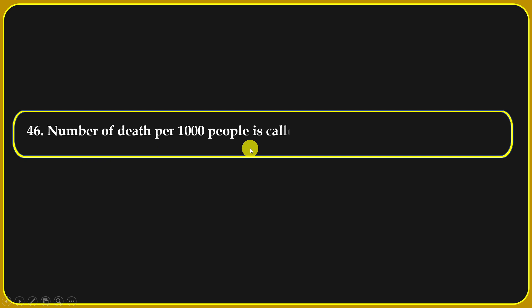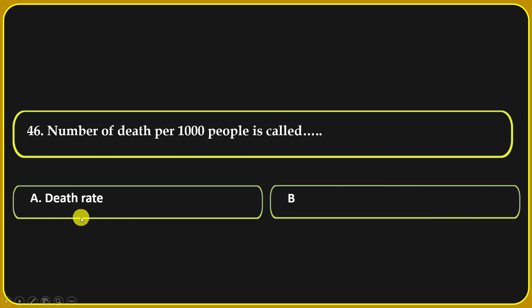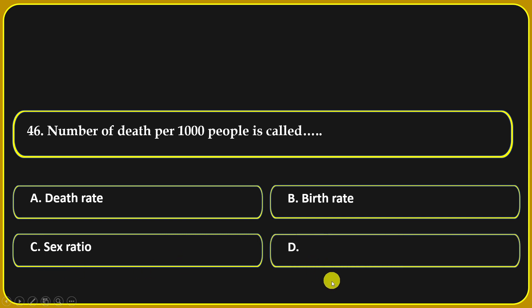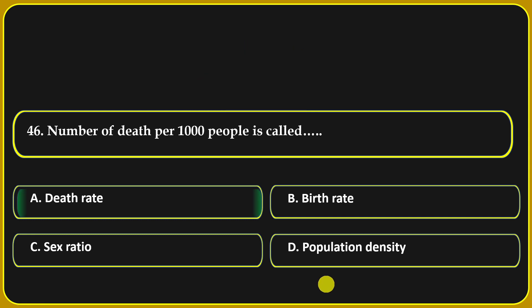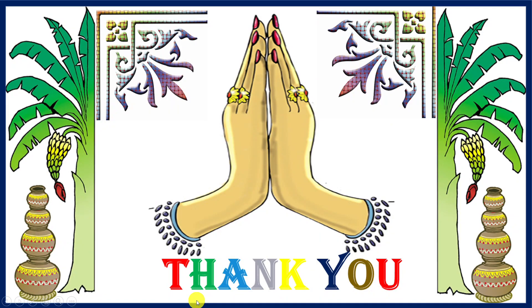The number of deaths per thousand people is called: death rate, birth rate, sex ratio, or population density. Death rate is the right answer.